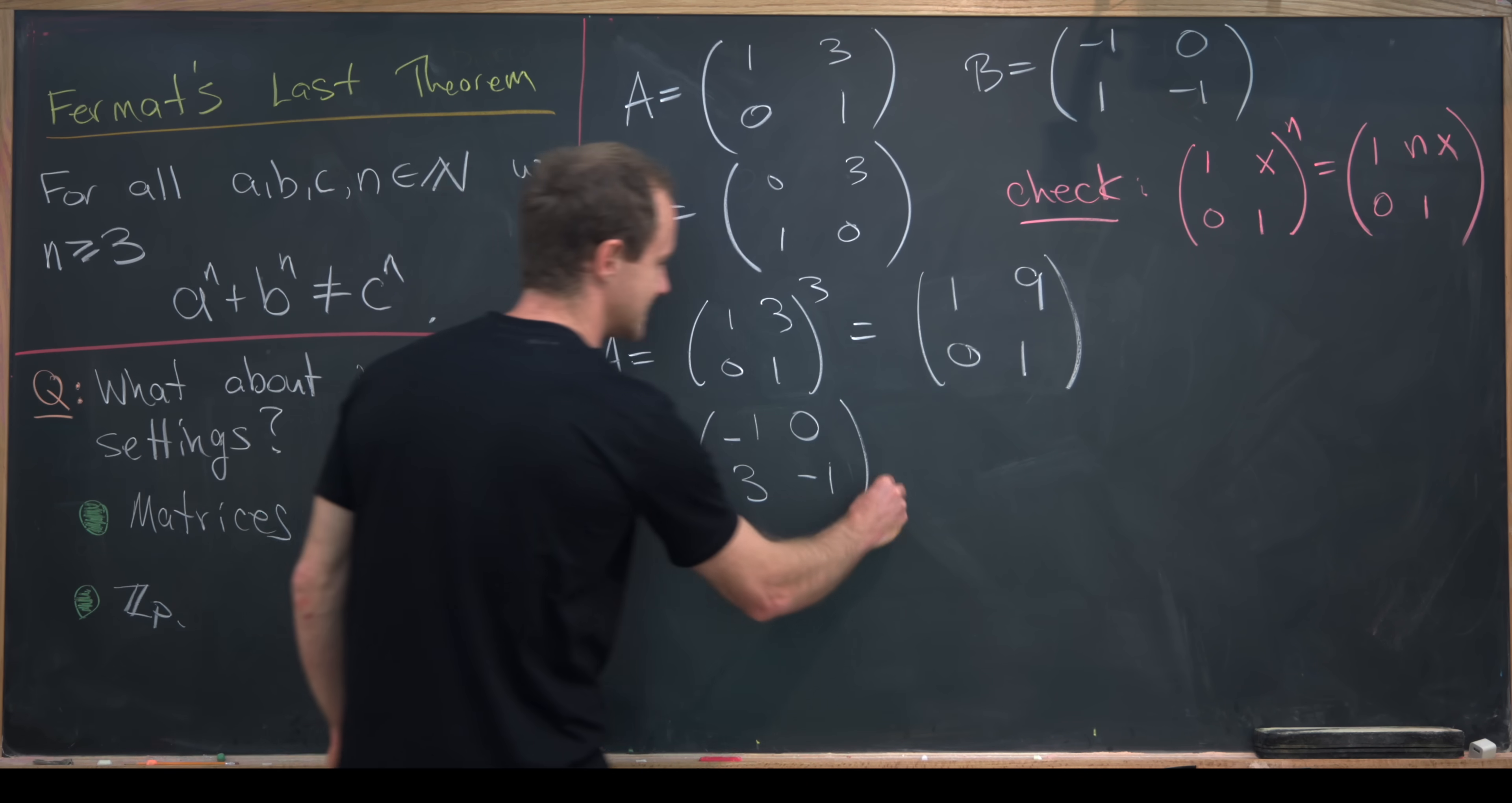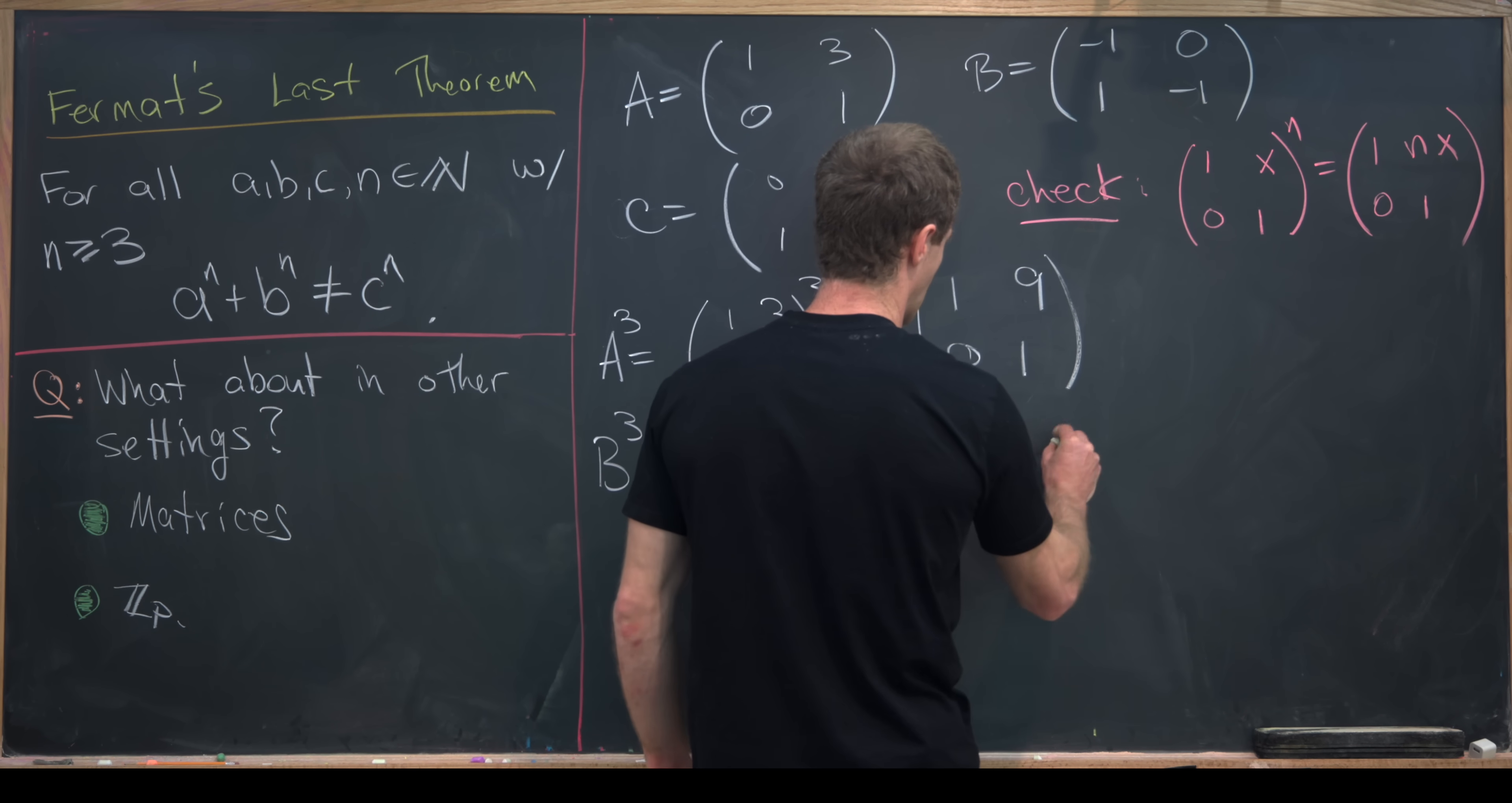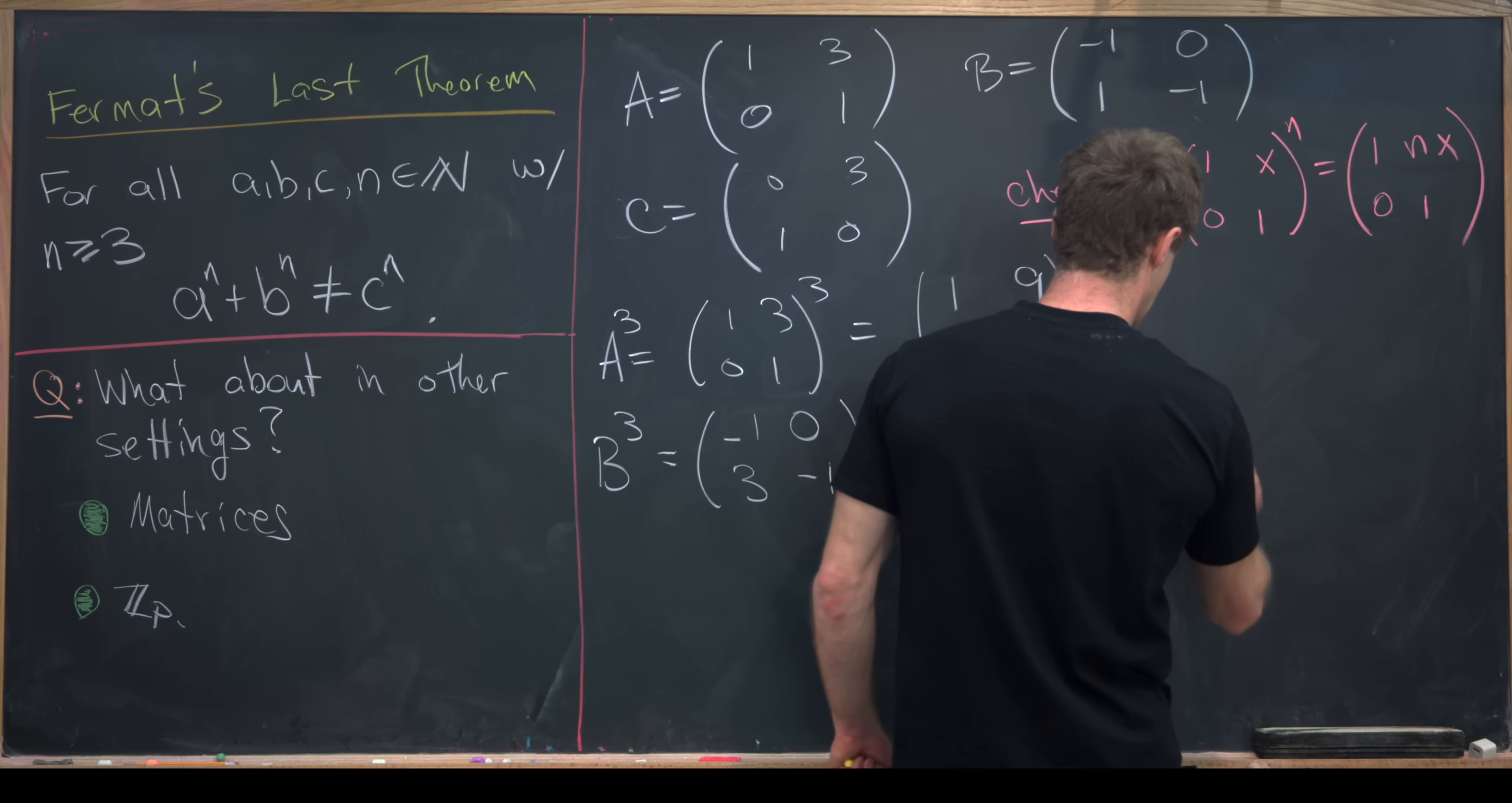So now let's also calculate C cubed. And we'll do this by hand the long way. So we have 0, 3, 1, 0, times 0, 3, 1, 0, and then another 0, 3, 1, 0.